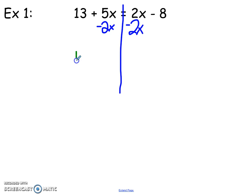So I'm going to bring down my 13. 5x minus 2x is going to be a positive 3x. 2x minus 2x will cancel out. That leaves me with 0. On the right side, I still have a negative 8.